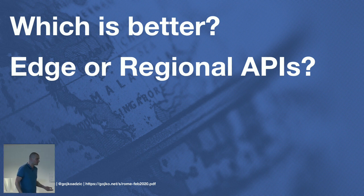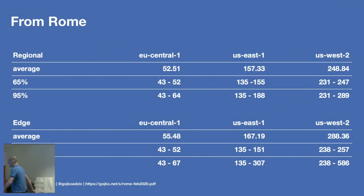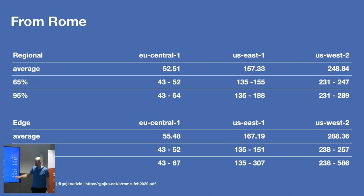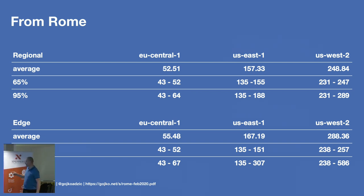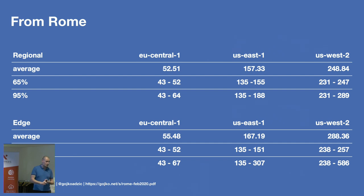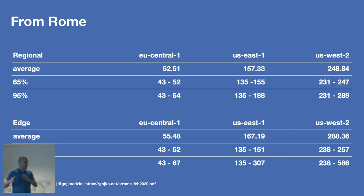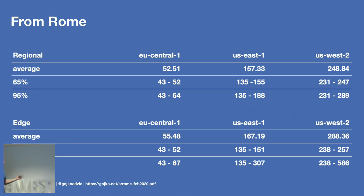There are many blog posts saying edge APIs are faster, but I tested it from my hotel this morning using Inquisitor. I tested connecting to Frankfurt, US East 1 (North Virginia), and US West 2 (Oregon). The regional APIs going directly over the public internet actually tend to work faster than the edge from Rome. I've tested from Amsterdam, Belgrade, and London — the data seems consistent. Don't trust me; test it yourself.